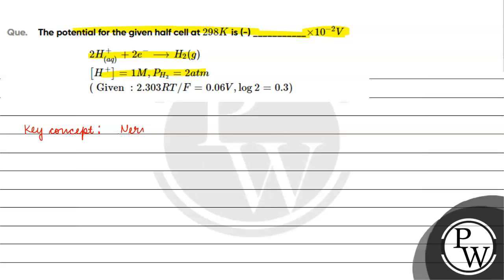The Nernst equation: E equals E° of H⁺/H₂ minus 0.06 by n log Q, where n is the number of electrons involved, which is 2 in our case.